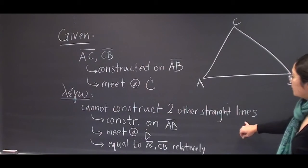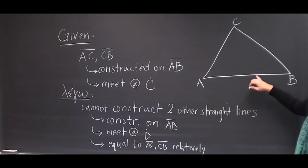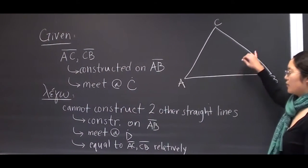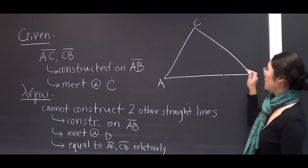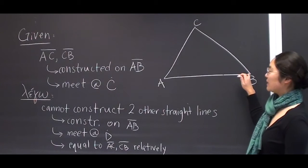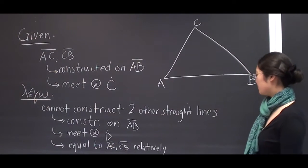and two other straight lines constructed on AB and meeting at point D and is also equal to AC and BC respectively.